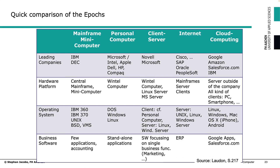Let's quickly go through the epochs again. In this table, you can see all the epochs in the columns — mainframe, mini computer, personal computer, and so on — and in the rows, information about leading companies. For mainframes: IBM and DEC. For personal computers: Microsoft, Intel, Apple, Dell, and others.